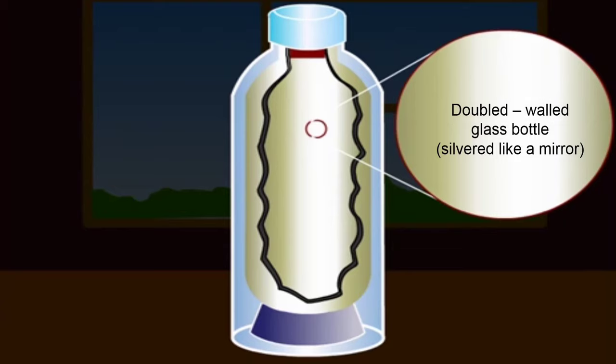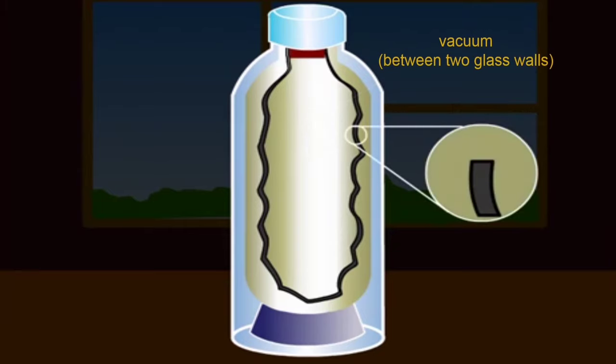This is done to reduce the transfer of heat by radiation. You know that a shiny surface is a bad absorber and also bad reflector of heat. All the air is evacuated from the space between the two walls of the glass bottle to prevent the transfer of heat by conduction and convection. You know conduction and convection cannot take place in vacuum.